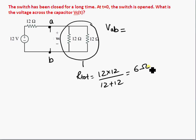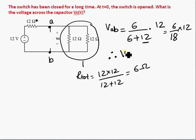So the total resistance in the circuit is equal to 6 ohms. The voltage across AB is 6 divided by 6 plus the 12 ohms, that's the 12 ohms resistor right here, times the input voltage which is 12, so 6 over 18 times 12, therefore voltage AB is equal to 4 volts.